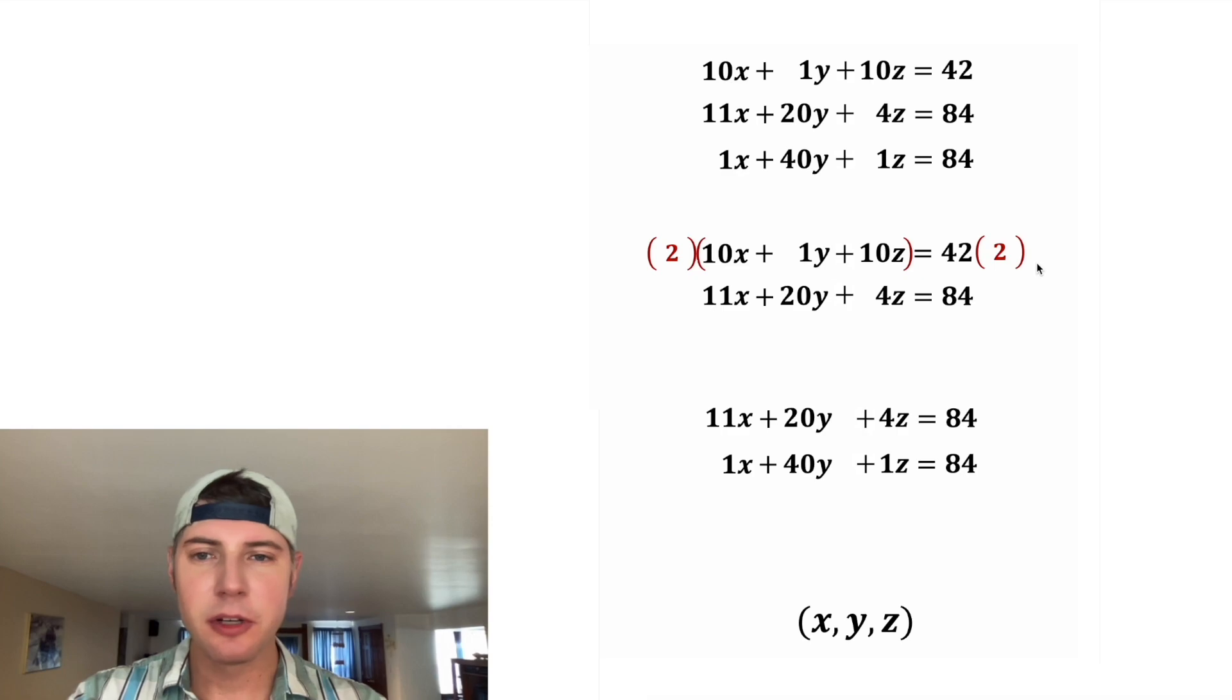We're going to multiply this top row by two and this bottom row by negative five. The two will distribute to make this a 20x, a 2y, a 20z, and the two will distribute here to give us an 84.